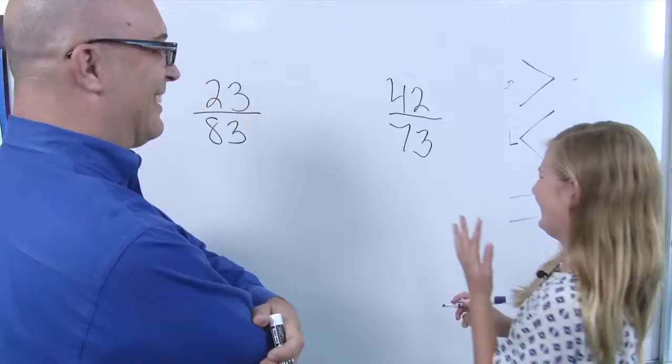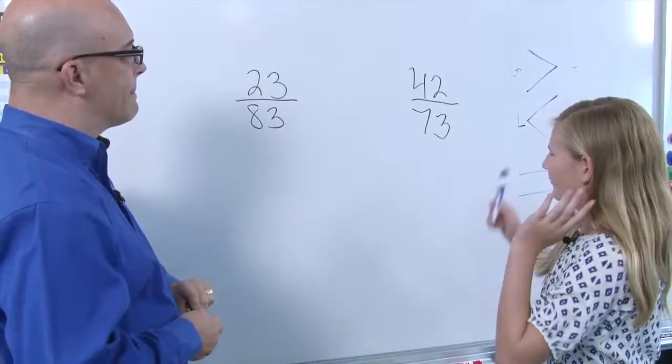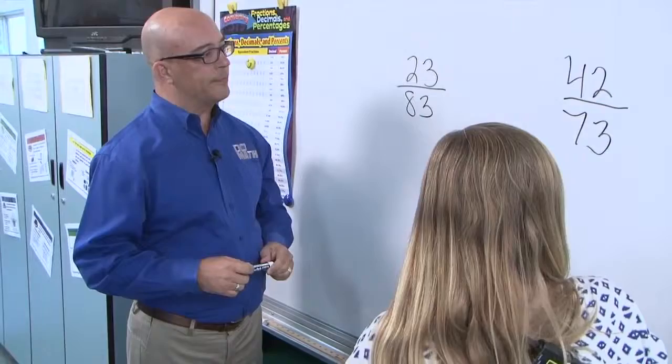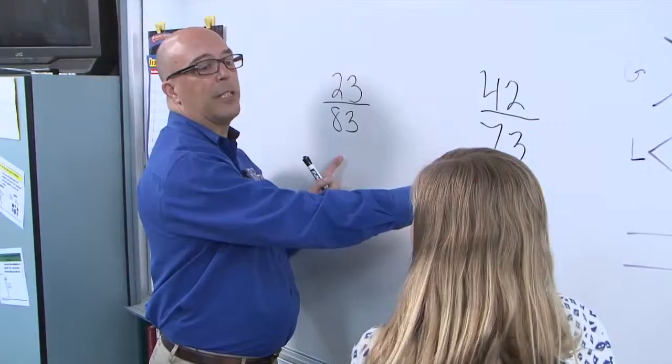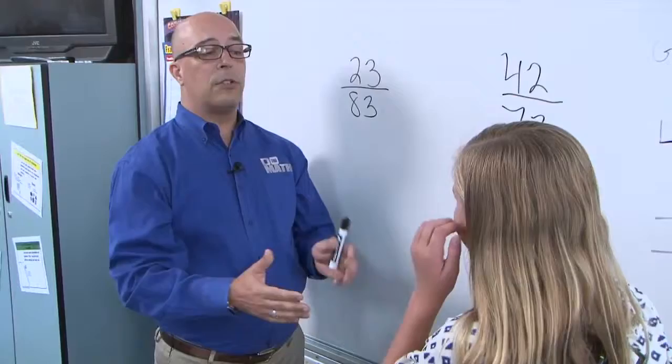How are you going to go about this problem? What are you trying to do first? You have to figure out which one is greater, equal, or less. So first you have to make the denominators the same. Well, you can do that, but there's also a way that's a little easier, because to find the common denominator between 83 and 73 you're probably just going to have to multiply those together, which is going to be a very large number.